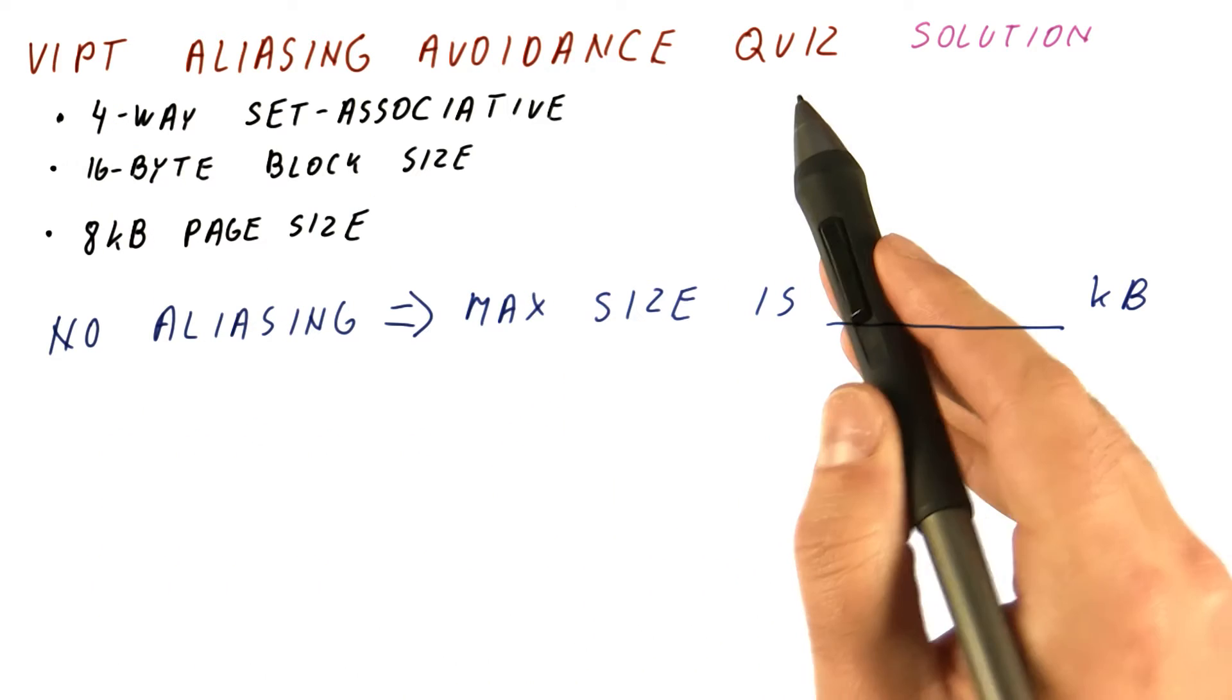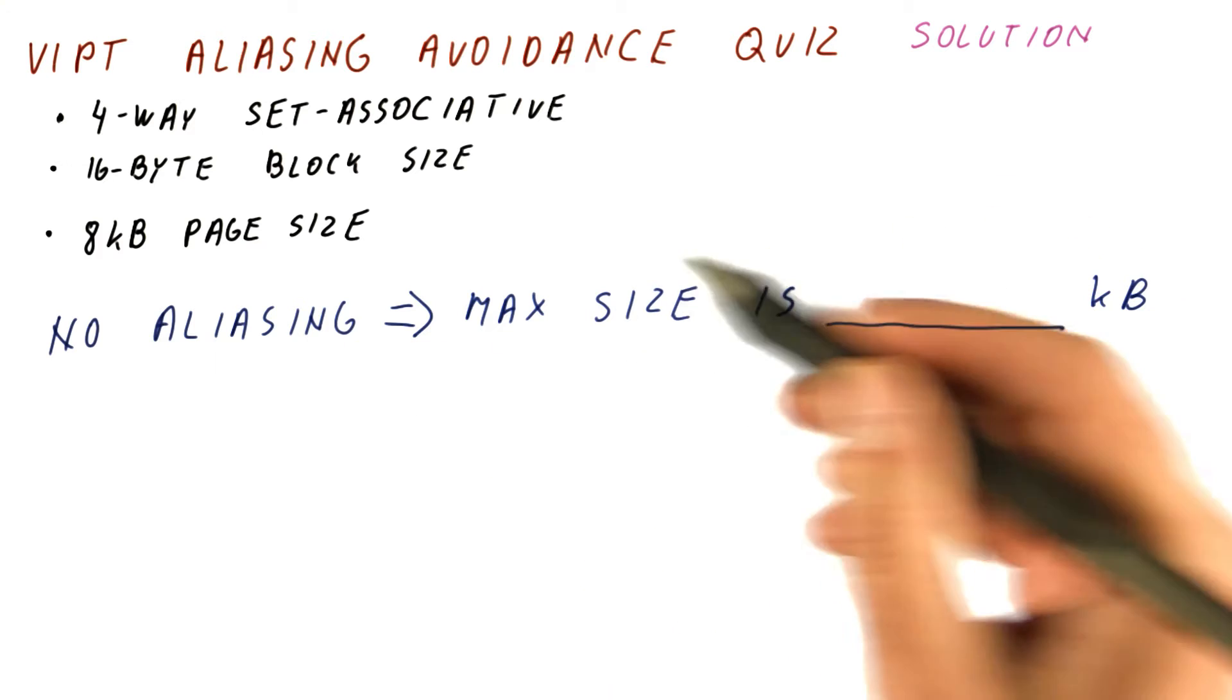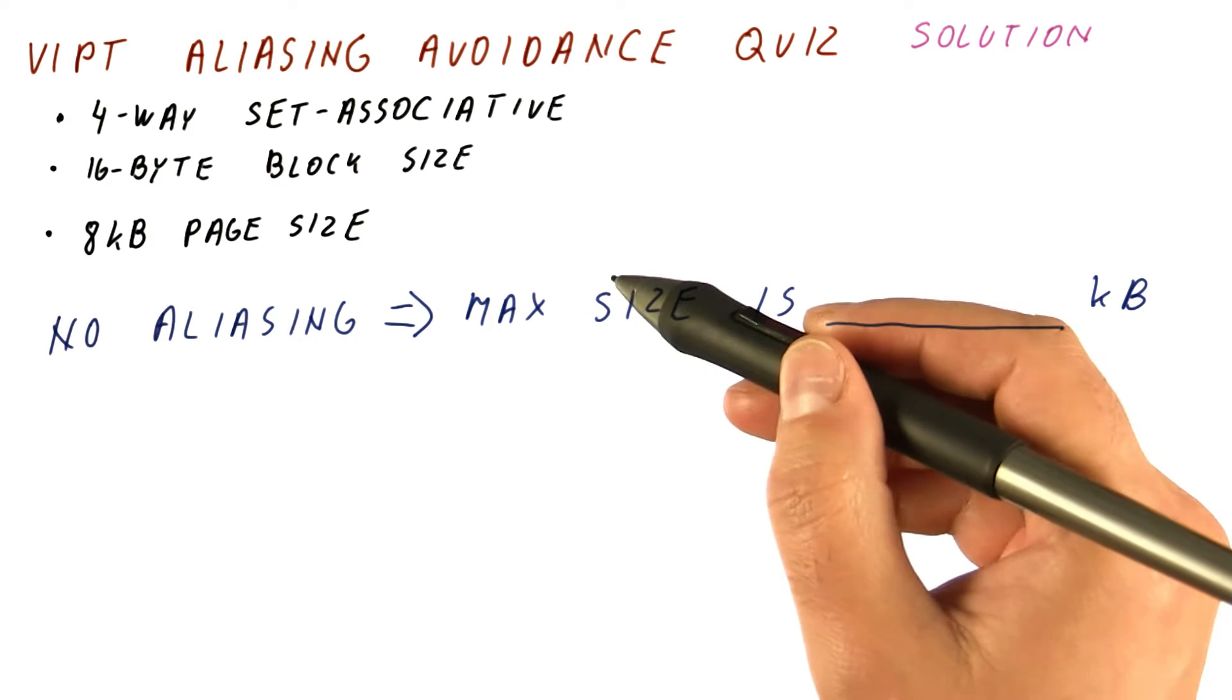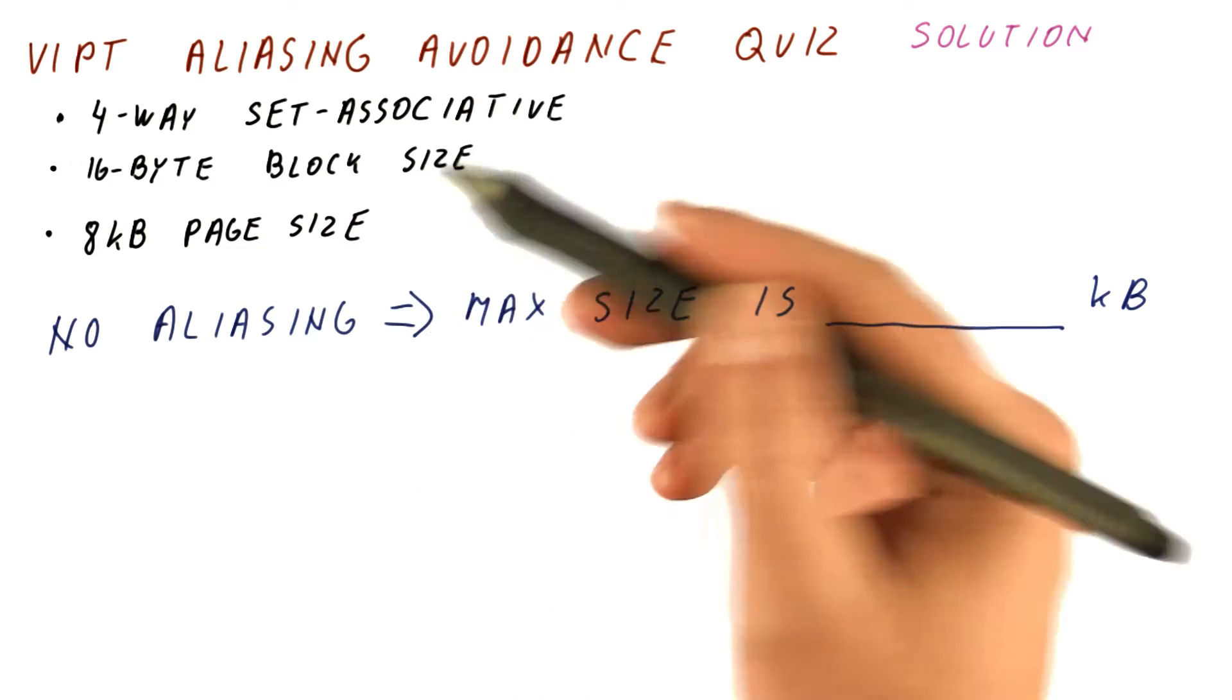Let's look at the solution to our virtual index physically tagged cache aliasing avoidance quiz. We want no aliasing, which means the index bits have to come from the page offset.